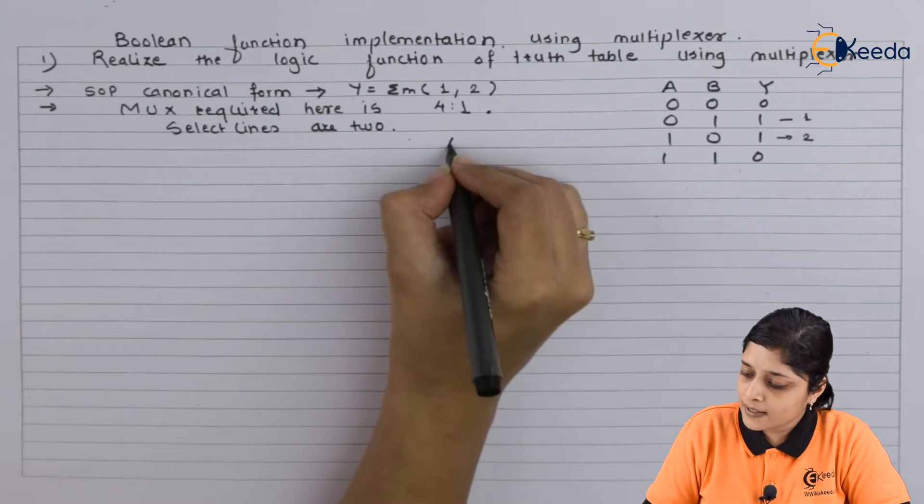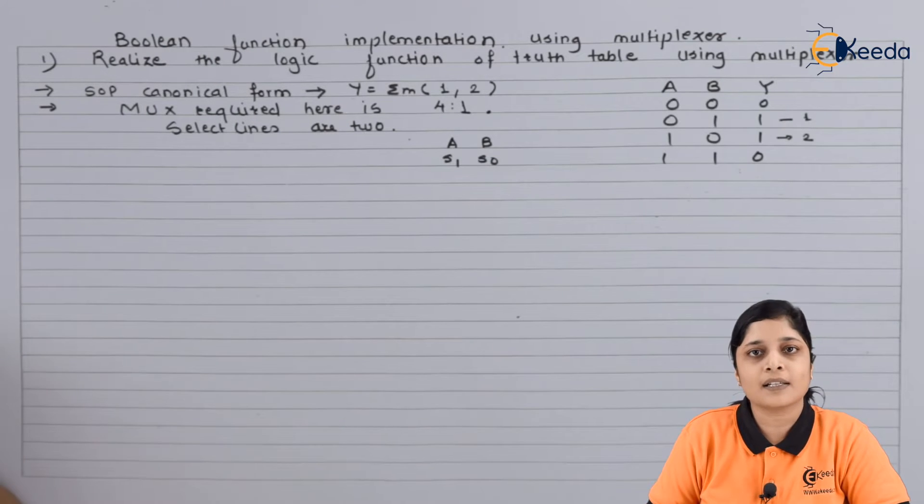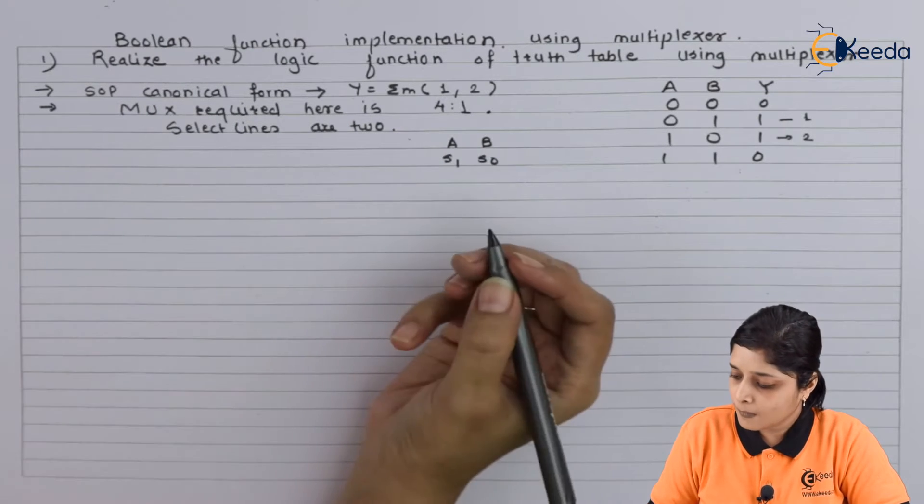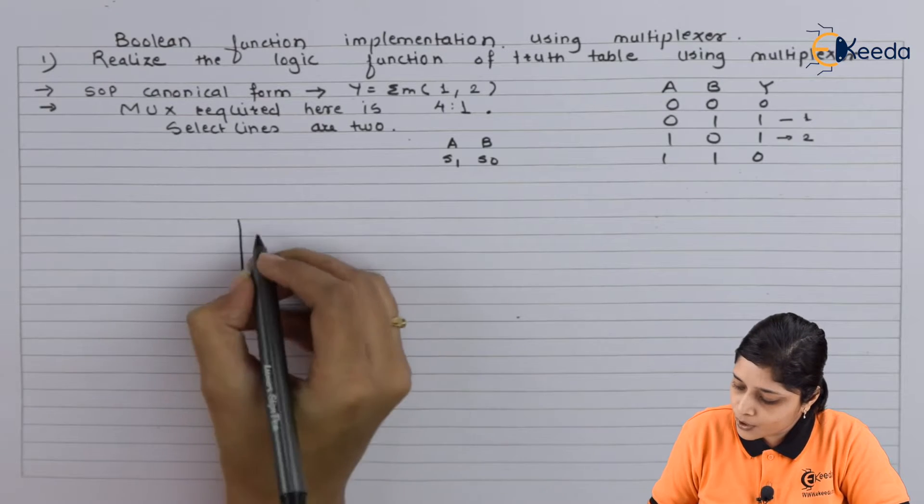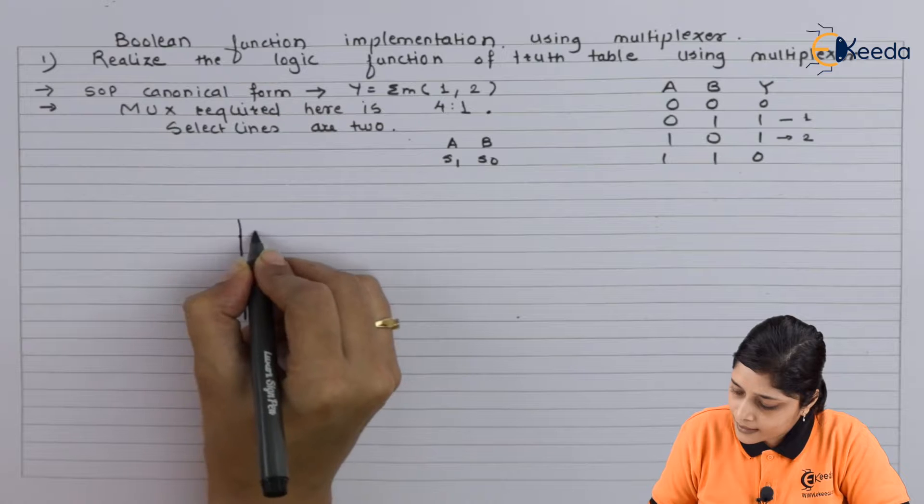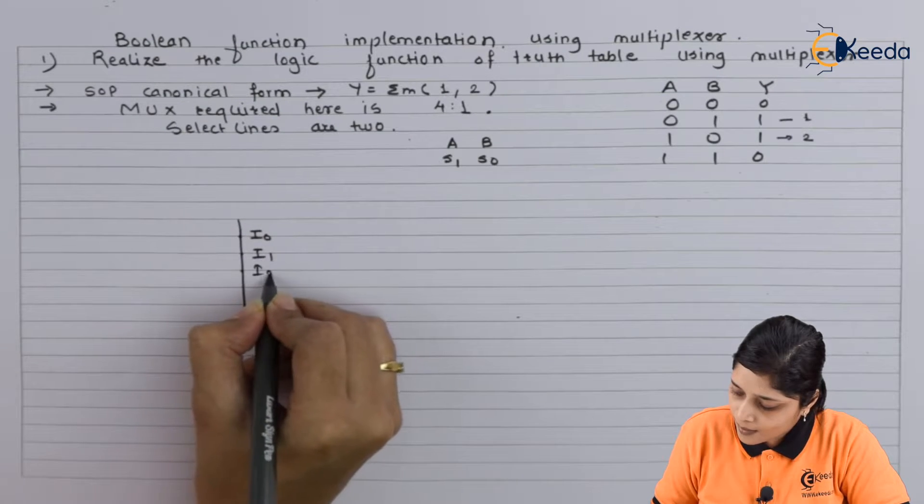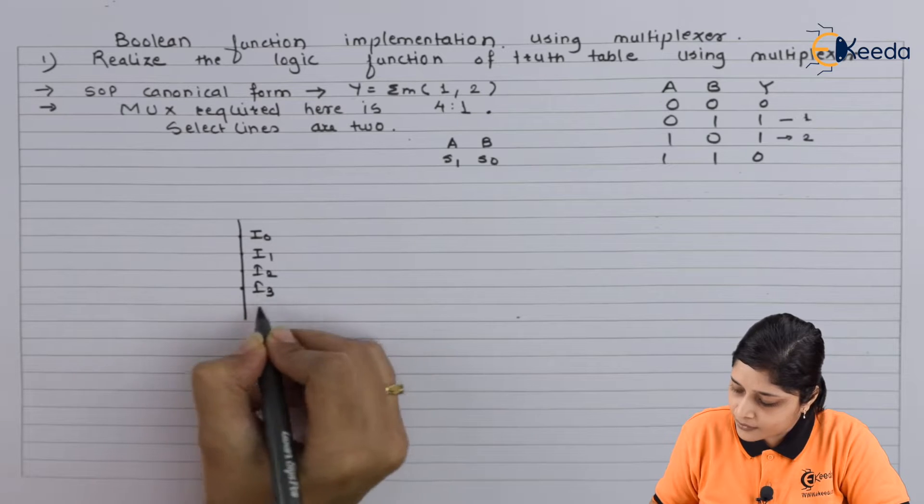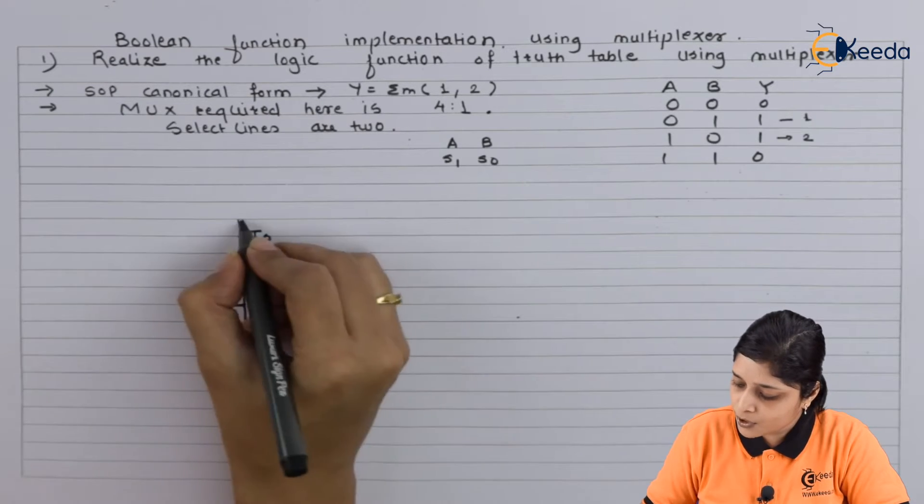So we will draw mux having four inputs that is i0, i1, i2, and i3. This is the enable terminal, you have to apply to logic one always.